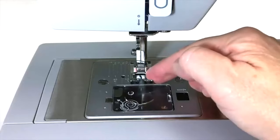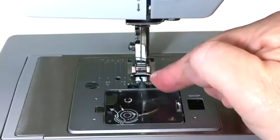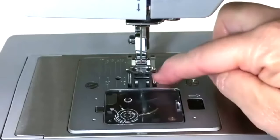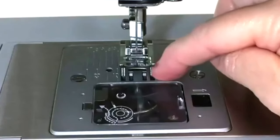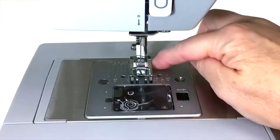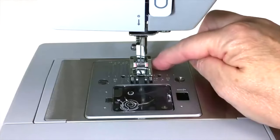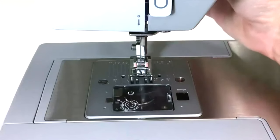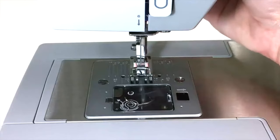It does exactly what it says. It presses down on the fabric so that the feed dogs, which are underneath the presser feet, can pull the fabric through the machine. Usually there's a lever on the back that will help you raise and lower the presser foot.